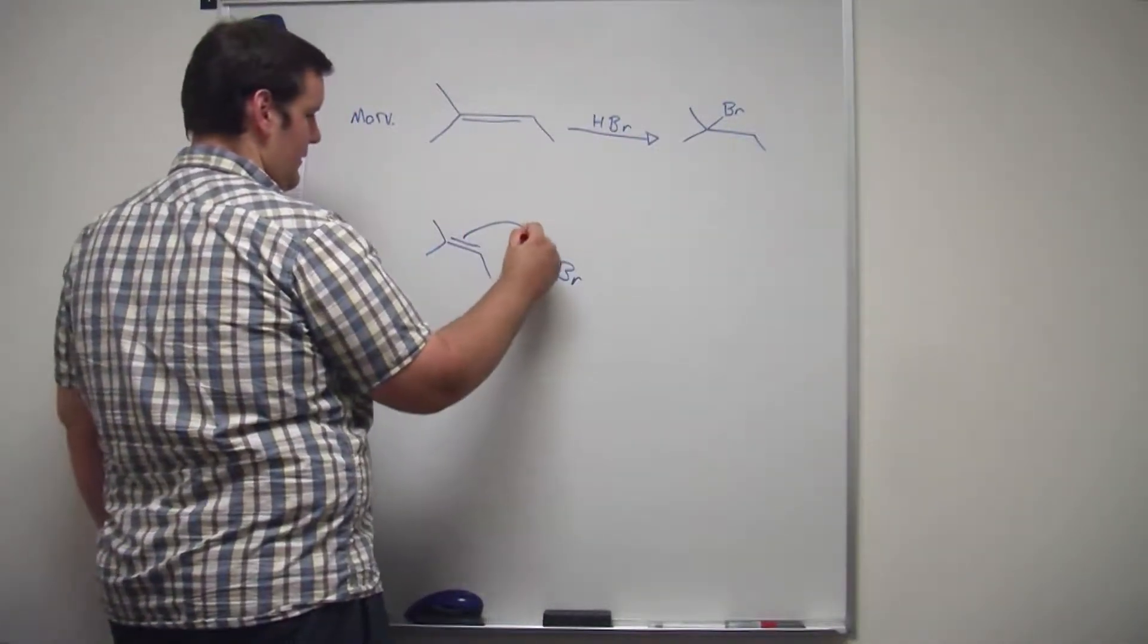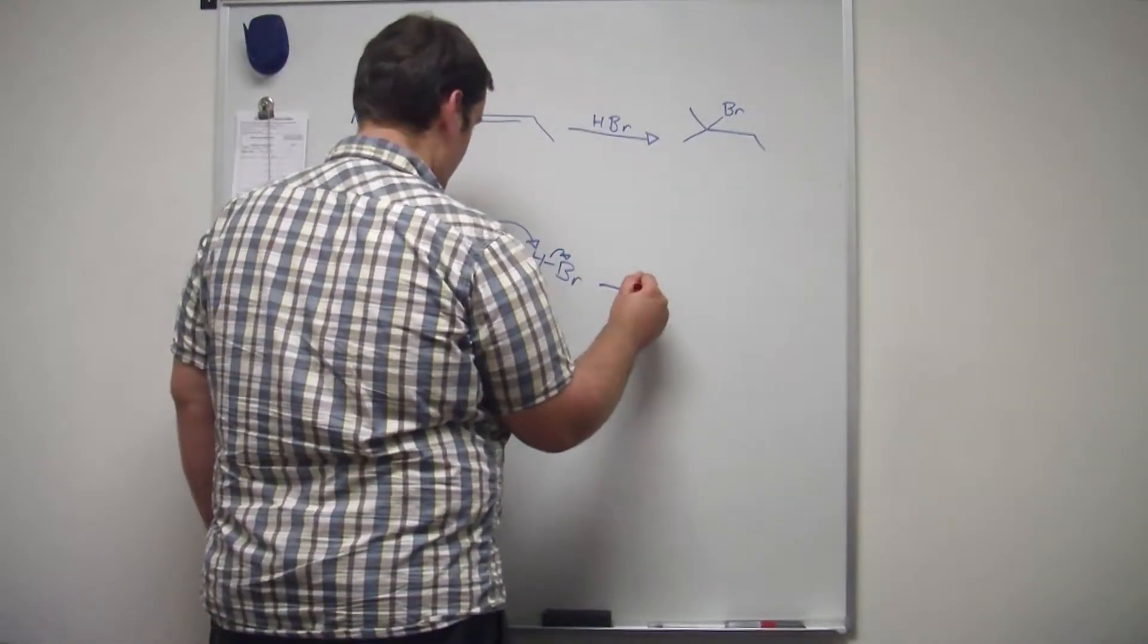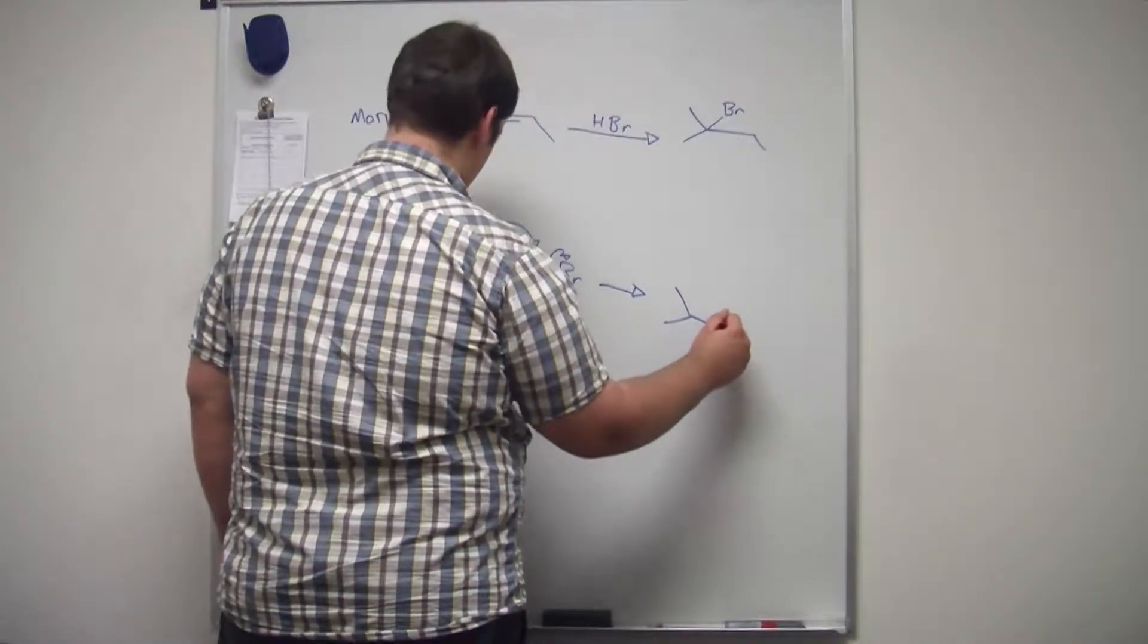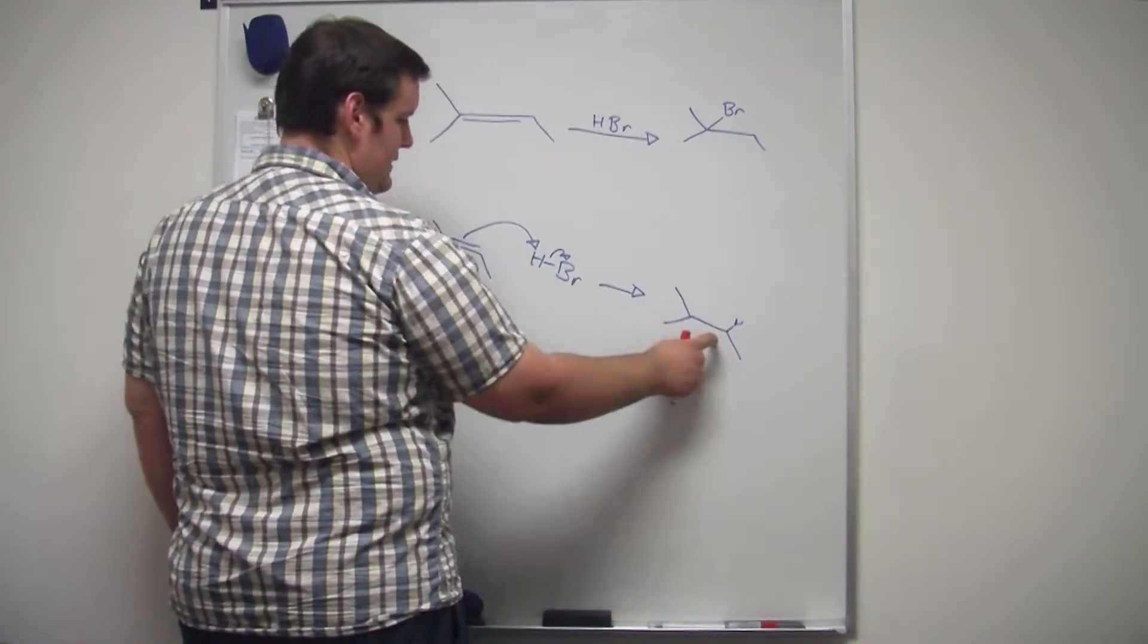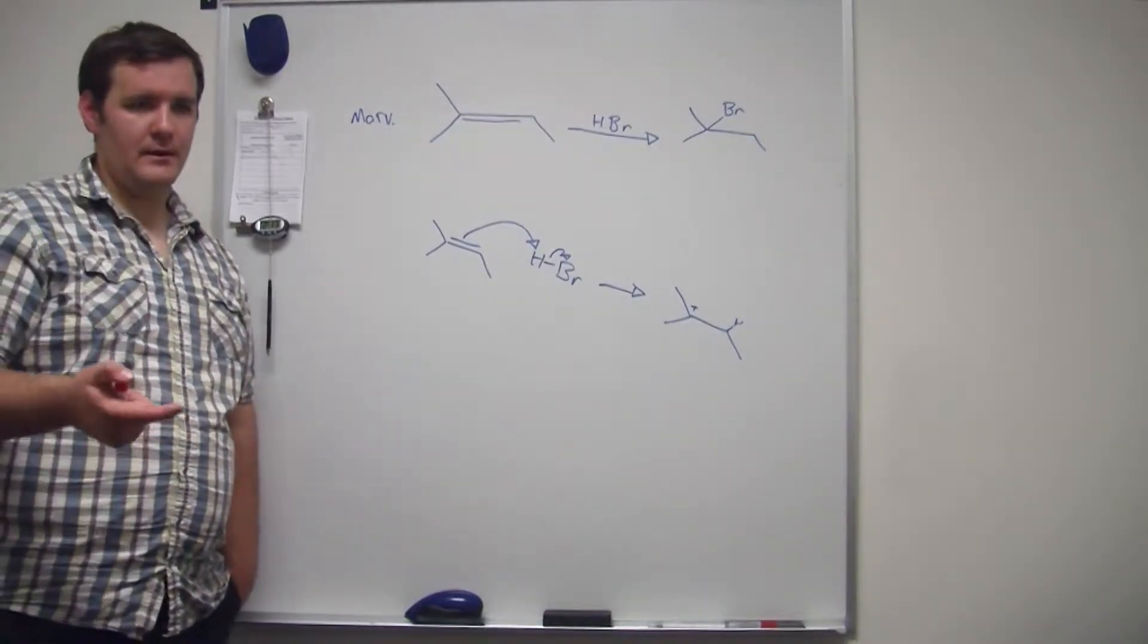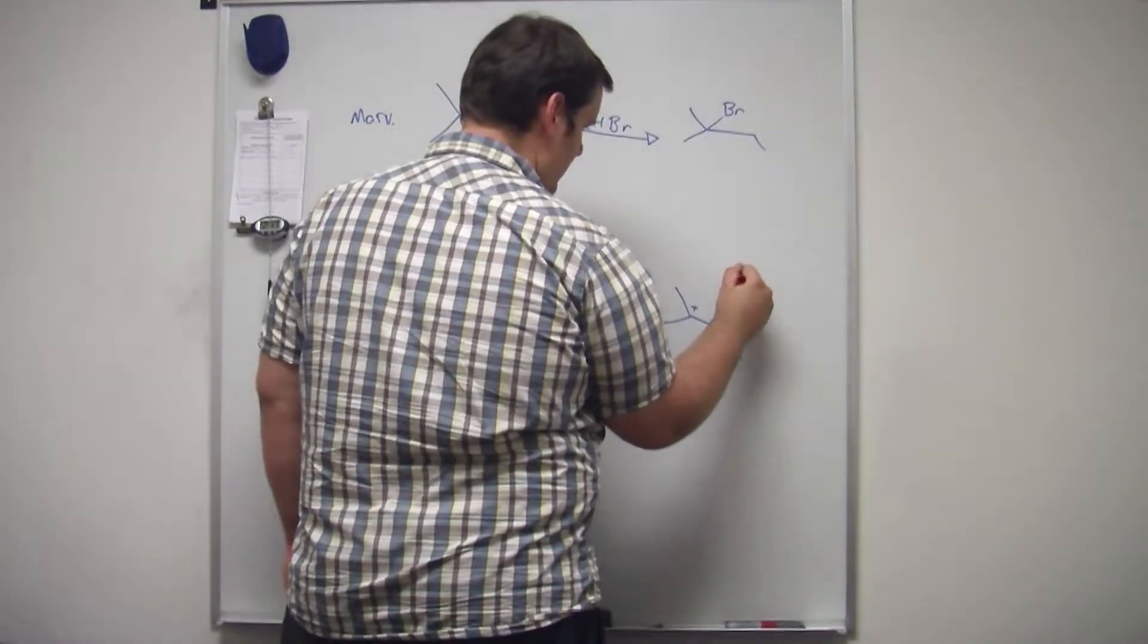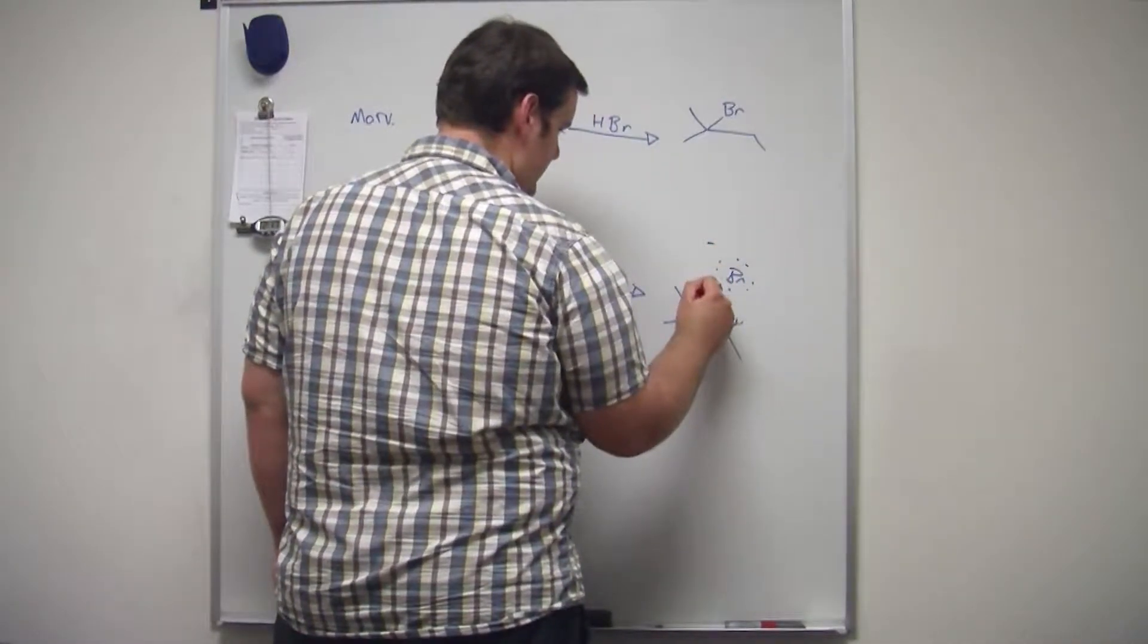The double bond grabs the hydrogen. And then it's important to think that this hydrogen is going here so the carbocation can be on the tertiary carbon. Okay. And then, Br just attaches.